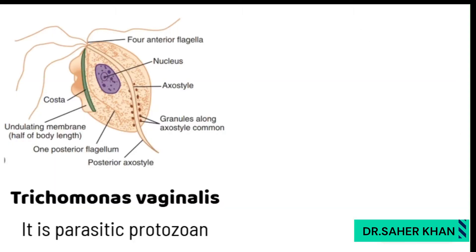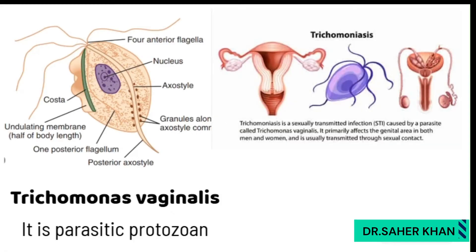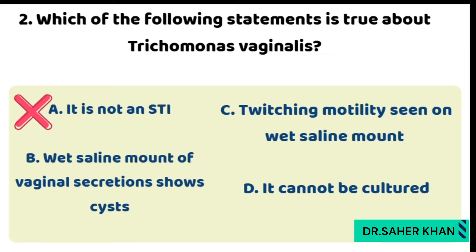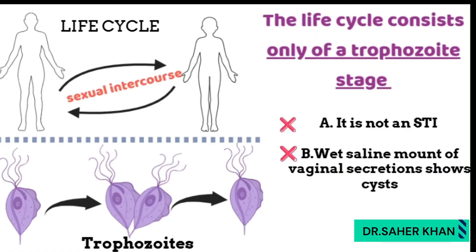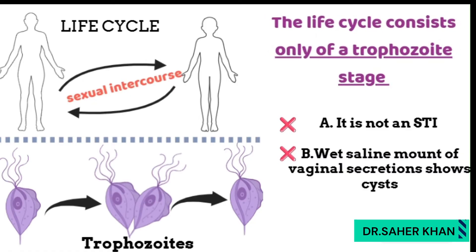First, we must understand that Trichomonas vaginalis is a parasitic protozoa responsible for causing trichomoniasis, which is the most common parasitic sexually transmitted infection. Option 1 — it is not an STI — is absolutely incorrect because Trichomonas vaginalis is transmitted through sexual contact. Option 2 — secretion shows cysts — is also absolutely wrong because Trichomonas vaginalis does not have a cystic stage; it only exists in a trophozoite stage.